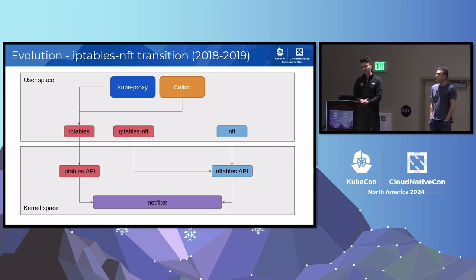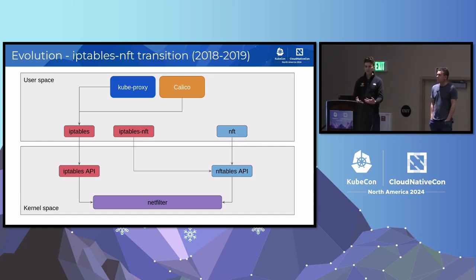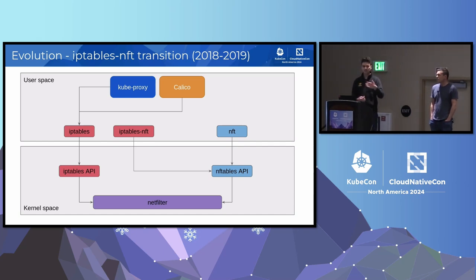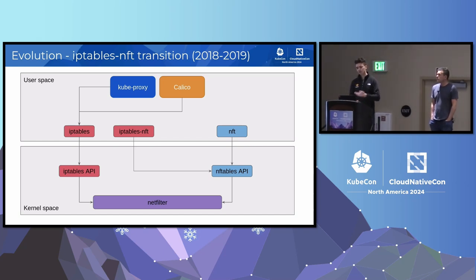Along the way, iptables-nft came along, in iptables version 1.8.1. It acted as a drop-in replacement for the existing user space tool, providing the same feature set, but under the hood was talking to the nftables API. This allowed kernel development to switch from the iptables API over to the nftables API without disrupting the ecosystem of applications built on top of iptables. However, applications are still limited to the feature set and capabilities of iptables when using this.